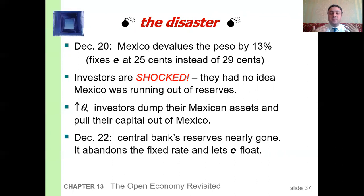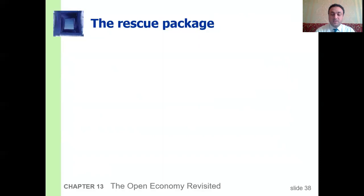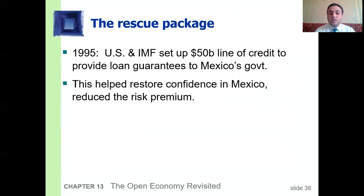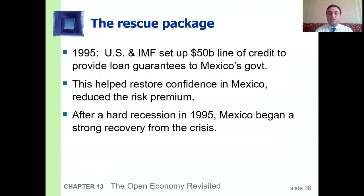The risk premium increased; investors dumped their Mexican assets and pulled capital out of Mexico. By December 22nd, the central bank's reserves were nearly gone. It abandoned the fixed rate and let the nominal exchange rate float. Within a week the nominal exchange rate fell another 30%. To address the crisis, in 1995 the United States and the International Monetary Fund set up a $50 billion line of credit to provide loan guarantees to Mexico's government. This helped restore confidence, reducing the risk premium. After a hard recession in 1995, Mexico began a strong recovery.